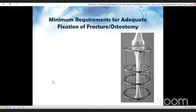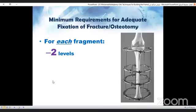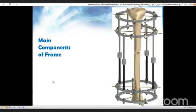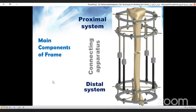Adequate fixation of a fracture or an osteotomy requires at least two levels and two different directions. The main components of the frame are the proximal system, the distal system, and the connections in between.